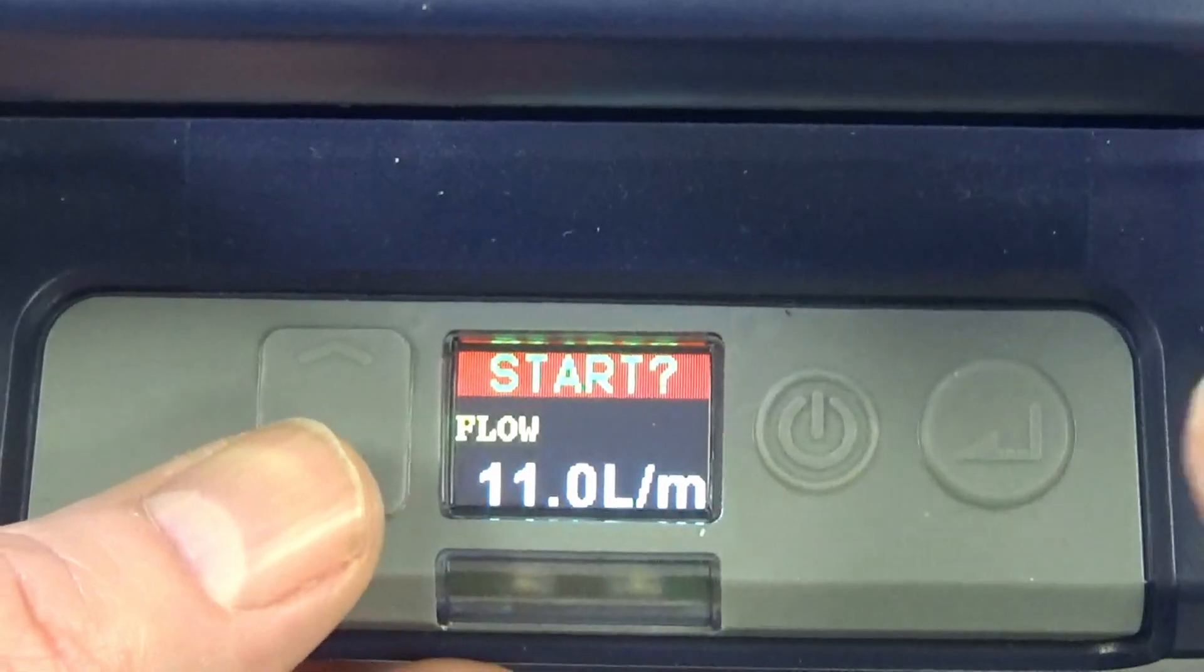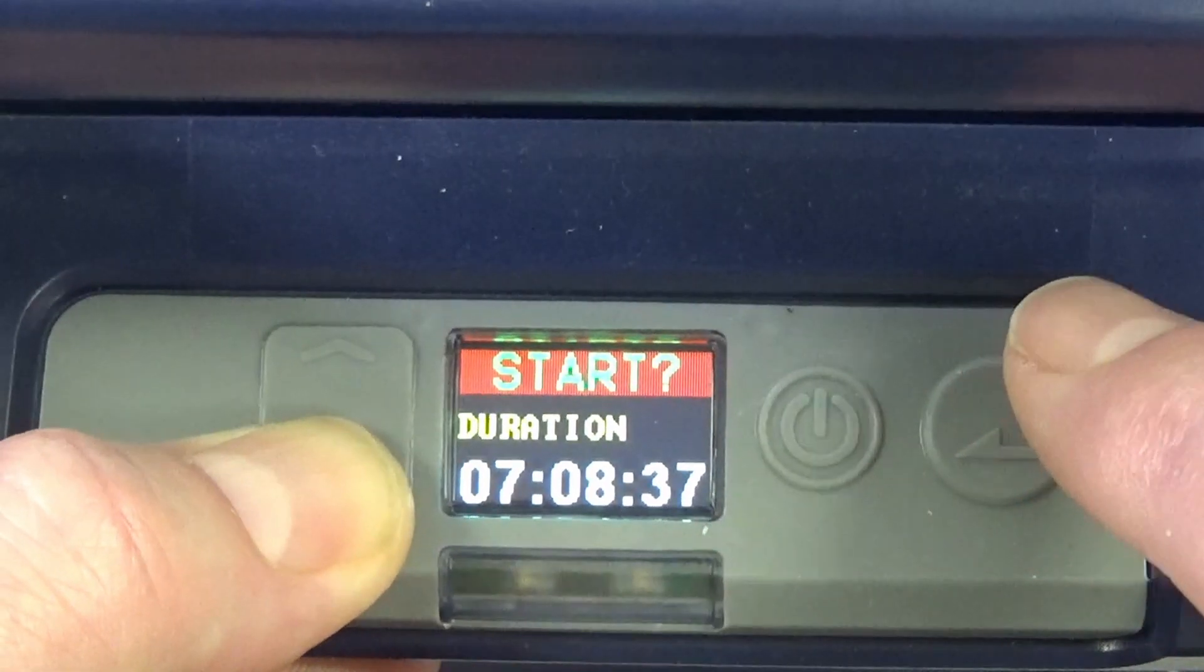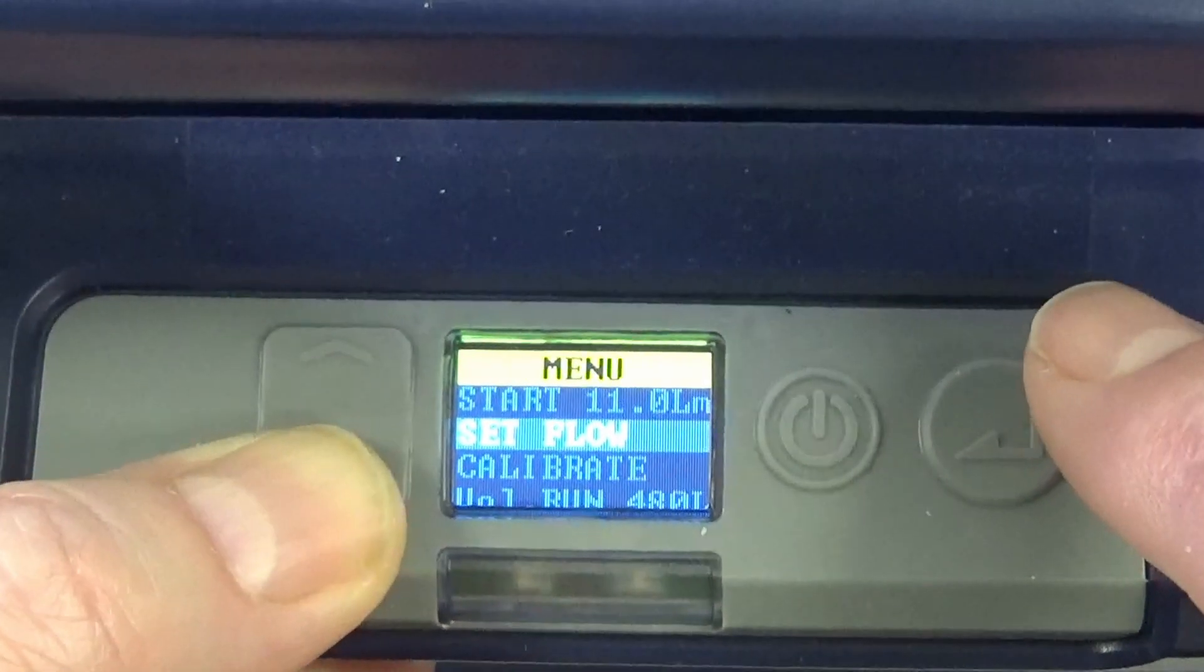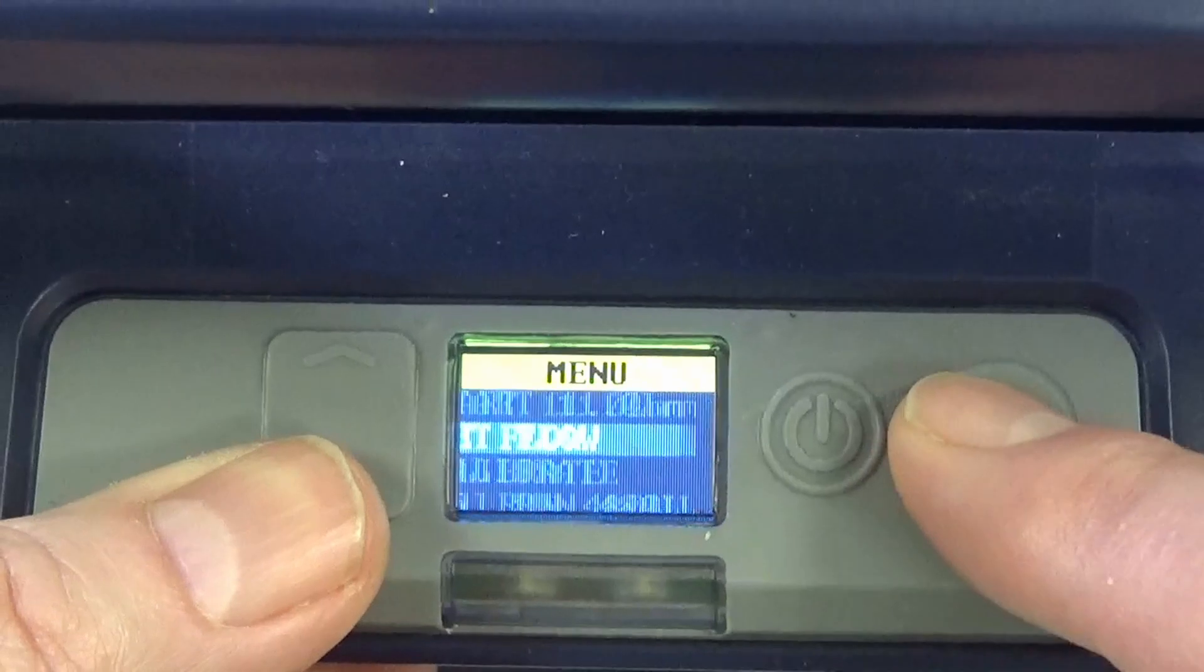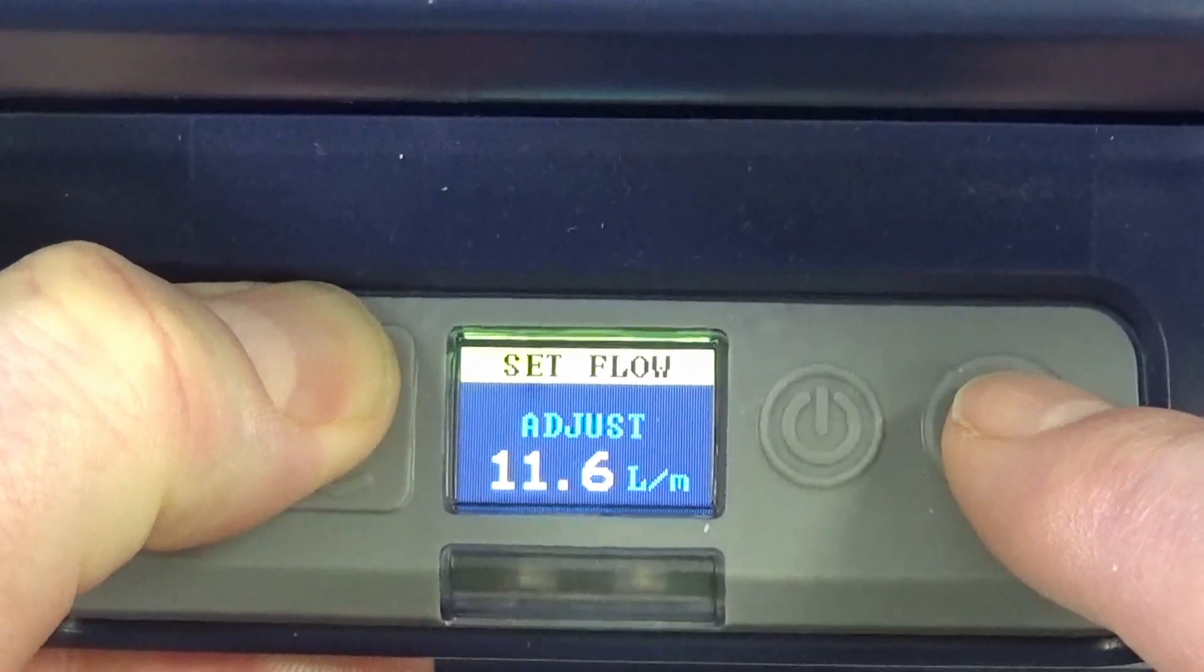To set the required flow on the pump, press the down cursor to access the menu. Select set flow and set the desired flow rate. In this case it is 12 litres per minute.